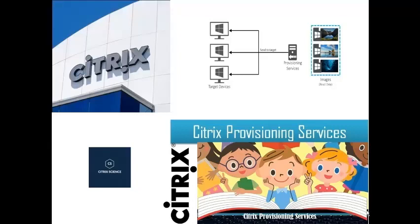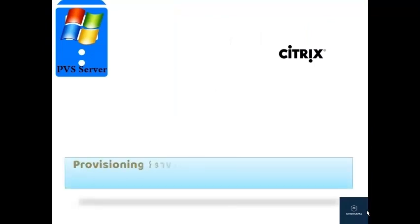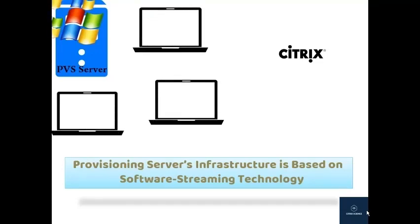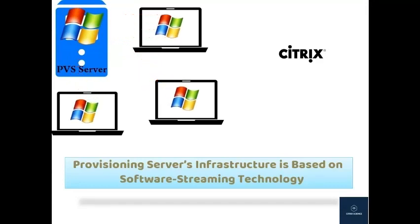In this video we are going to see about Citrix Provisioning Services. Provisioning Services is based on software streaming technology. PVS streams a single shared disk image to multiple individual machines rather than copying images to them. Citrix Provisioning enables organizations to reduce the number of disk images they have to manage, and can reduce operational and storage costs since it acts as a software-based storage offloading solution.